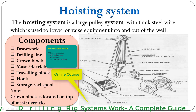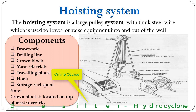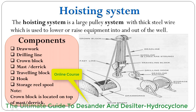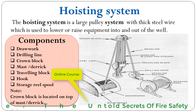When the drilling line is reeled out from the drawworks drum — that is, the drilling line is released from the drawworks drum — the hook and traveling block will move down, so the drill string will lower. If we reel in the drilling line on the drawworks drum, the hook and traveling block will move up, so the drill string will raise. This is how we operate the drawworks to raise or lower the hook and traveling block.